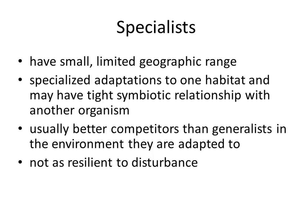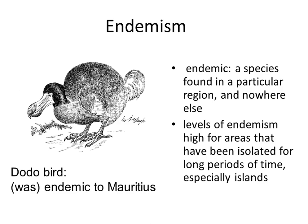Specialists have a very limited geographic range. They have specialized adaptations to one habitat and may have a tight symbiotic relationship with another organism. They are usually better competitors than generalists in the environment they are adapted to, but they are not as resilient to disturbance. Endemism is the concept that a species is found in a particular region and nowhere else. Levels of endemism are high for areas isolated for long periods of time, especially islands. The dodo bird is an example — it was endemic to Mauritius.